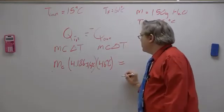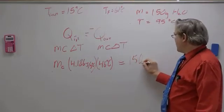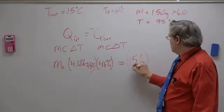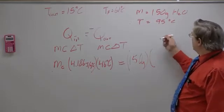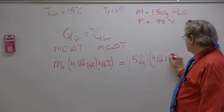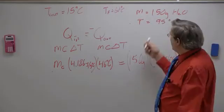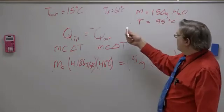And that's going to be equal to our known mass of 150 grams of water times our 4.186 joules per gram degree Celsius times our delta t. And if I want to bring 95 degree Celsius.